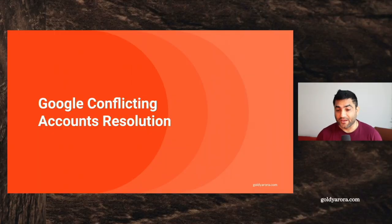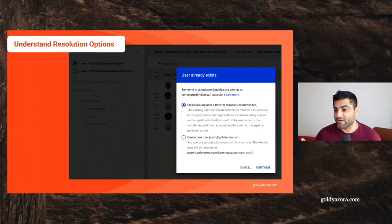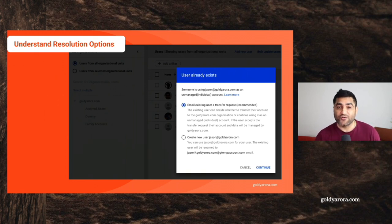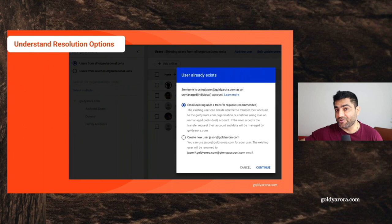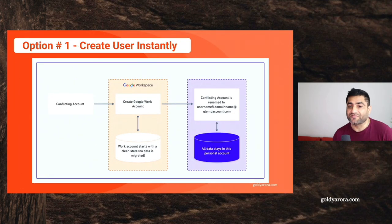Let me share a few slides to help you understand the resolution options. If you have a conflicting account, as covered in the last video, you will see a screen where Google says there is a conflict for this account. You have two options: either you can create a new account for this person, because you have verified domain ownership to Google, which means you have more rights to leverage this domain to create user email accounts.